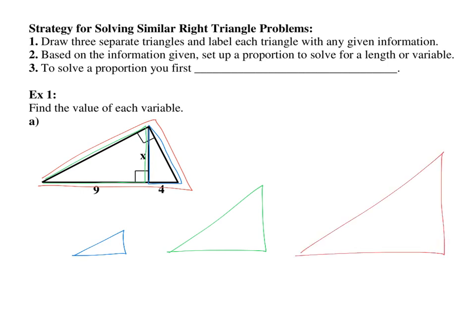For the blue triangle, I know this is four and this is x. For the green, this is x and this is nine. For the red, this is 13. Based on the information given, set up a proportion to solve for a length or variable.